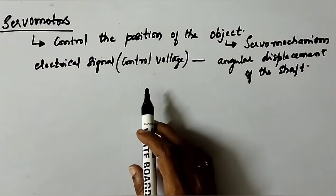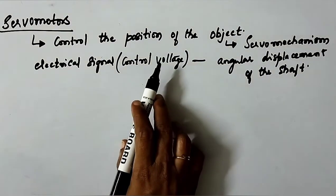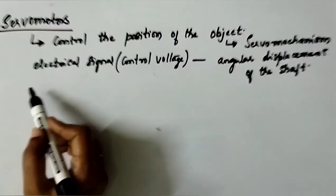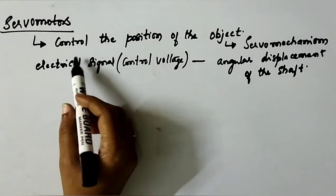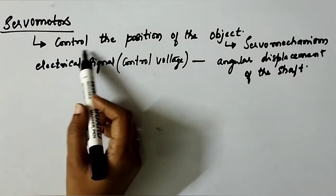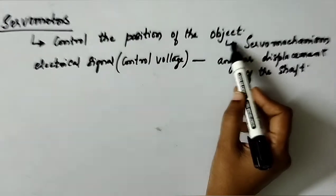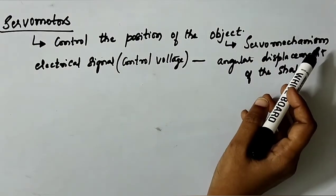Hello viewers, in today's session we'll start learning servo motors. These servo motors are used in automatic control systems and the basic purpose is to control the position of the object. This particular mechanism you call it as servo mechanism.